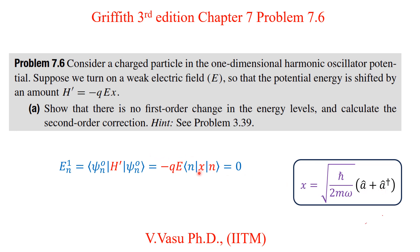The expectation value splits into two parts: ⟨n|A|n⟩ and ⟨n|A†|n⟩. When A acts on |n⟩ it gives |n-1⟩, so by orthogonality ⟨n|n-1⟩ = 0. When A† acts on |n⟩ it gives |n+1⟩, so ⟨n|n+1⟩ = 0 by orthogonality. Therefore there is no first-order energy correction.